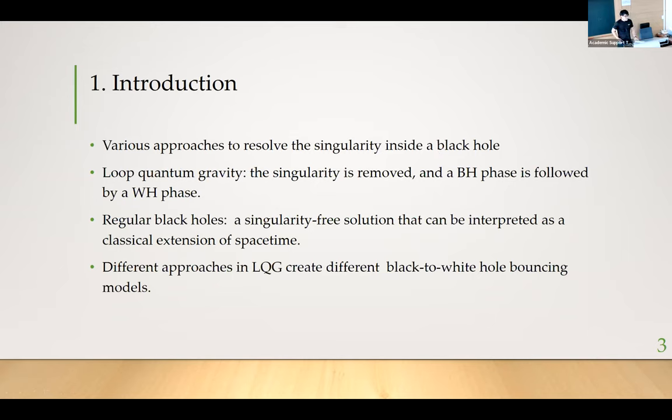One of the biggest questions in theoretical physics is the singularity inside a black hole. There are many different quantum gravity theories trying to solve this problem. One of the strong candidates is the loop quantum gravity. In this theory, singularity usually is removed and replaced by a black hole phase followed by a white hole phase. This is why we say black to white hole bouncing scenario. This picture belongs to the category of regular black holes. In this case, singularity-free solution can be interpreted as a classical extension of space-time. But even from loop quantum gravity, there are different approaches that create different black to white hole bouncing scenario models.